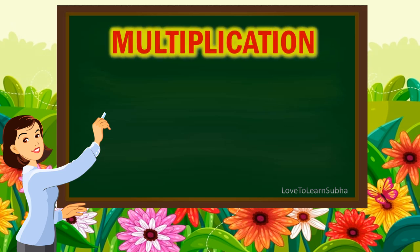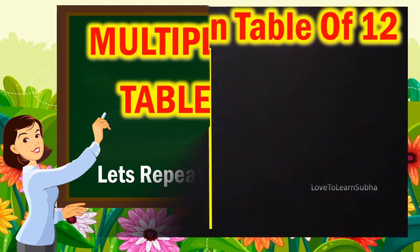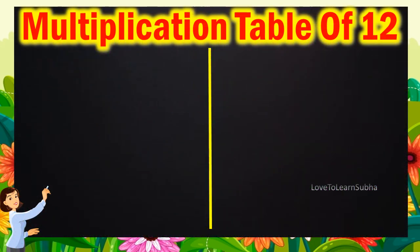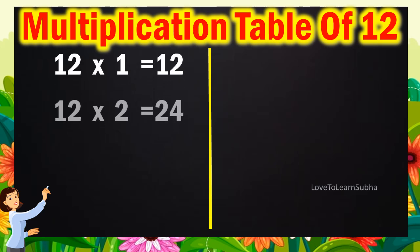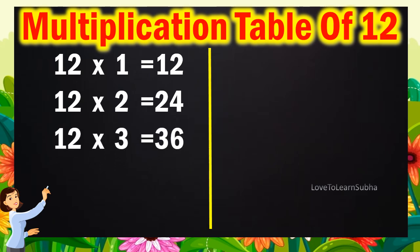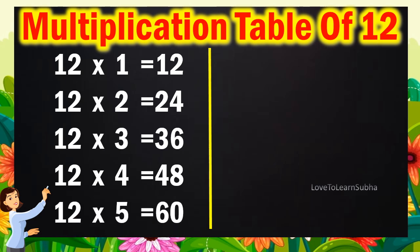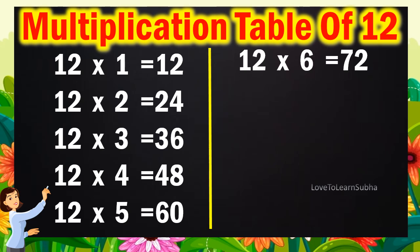Now, let's repeat it once again. 12 1s are 12. 12 2s are 24. 12 3s are 36. 12 4s are 48. 12 5s are 60. 12 6s are 72.